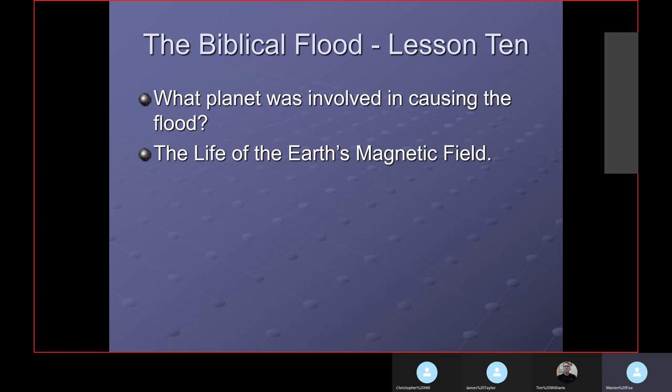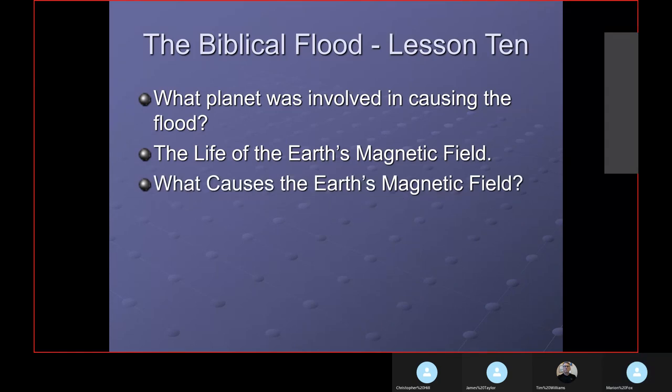We'll be looking at the life of the Earth's magnetic field. The magnetic field of the Earth shields us from some harmful radiation, so it's a benefit to us. But the field is decreasing in intensity. We ask the question, what causes the Earth's magnetic field? As far as I know, there's only three kinds of sources that would create a magnetic field.